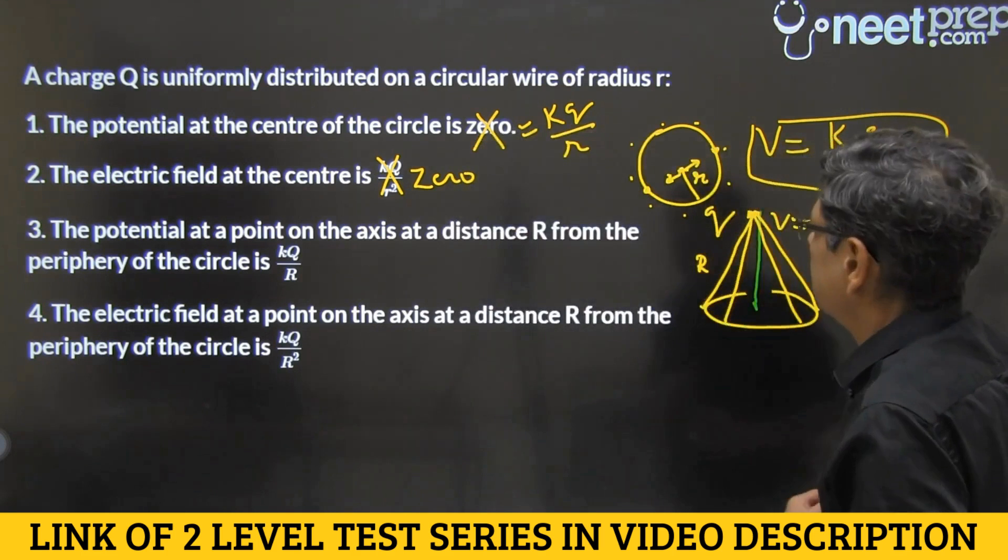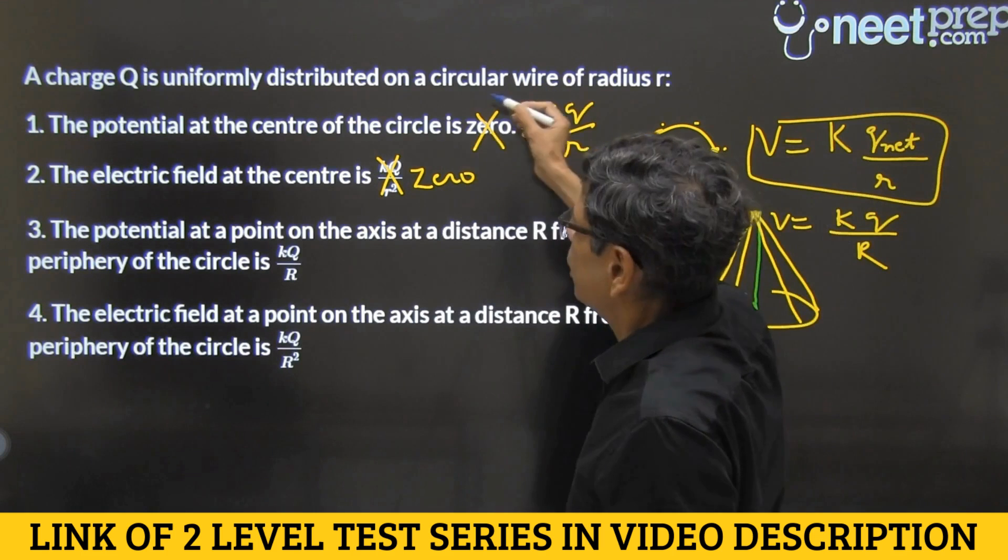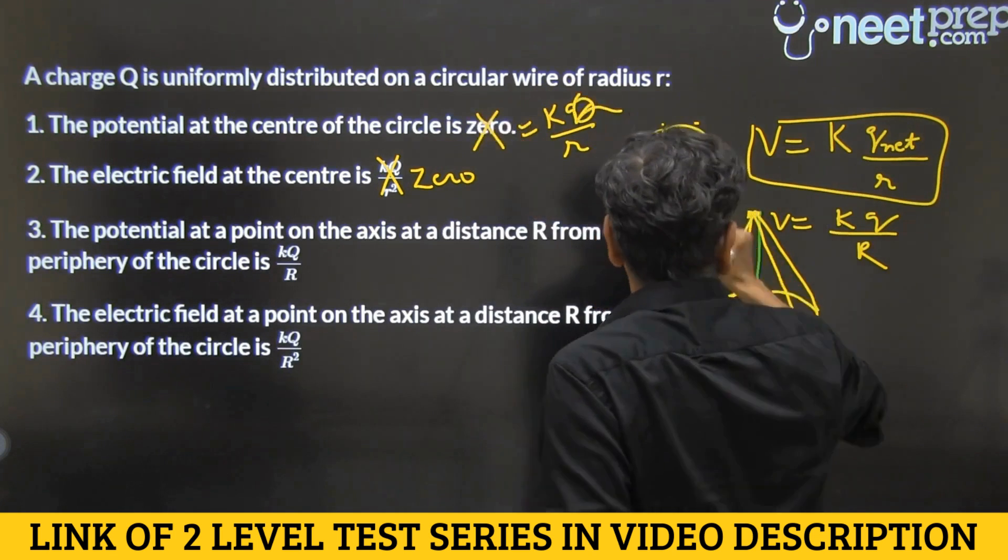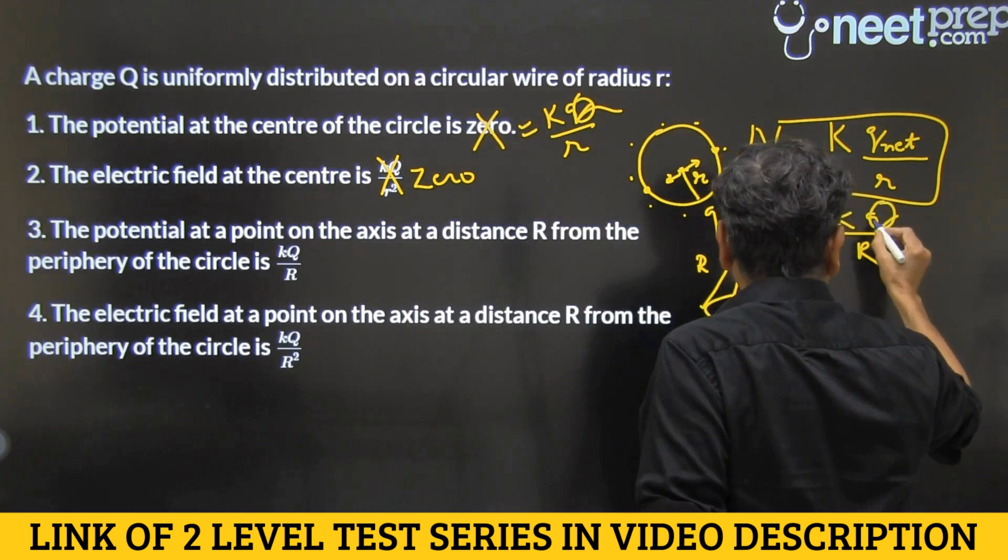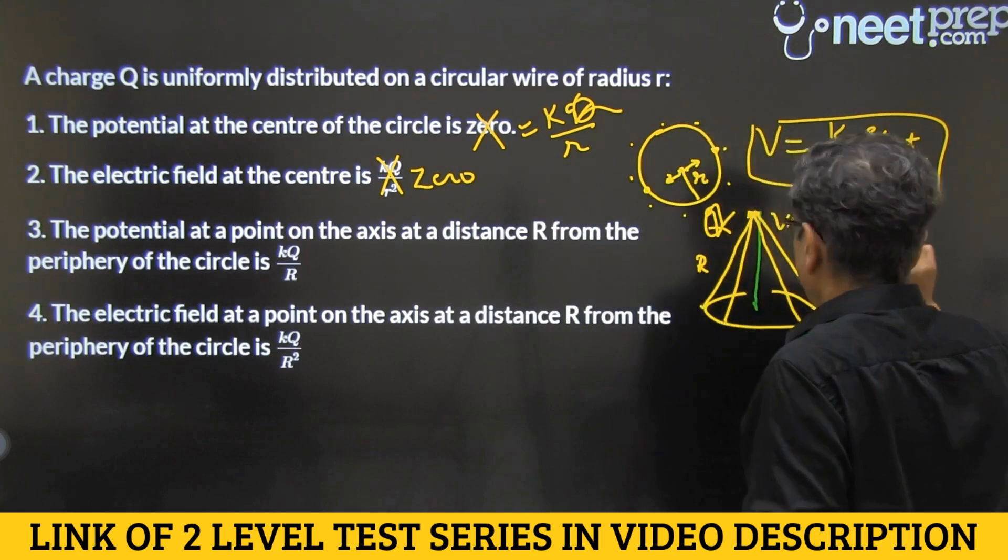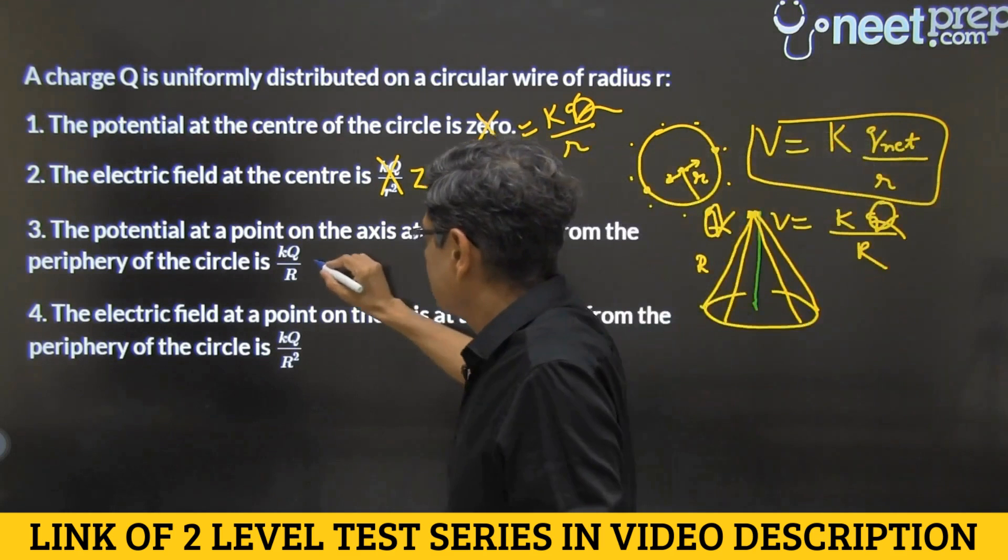Q is capital Q, so here as well as here I should have written capital Q, also here. Okay. So KQ by capital R and this is right.